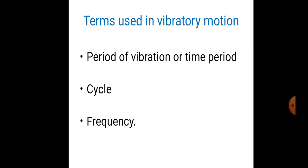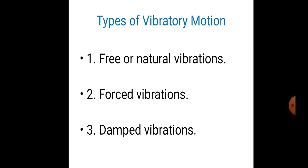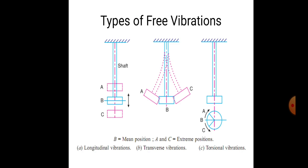Now, what are the types of vibratory motions? There are three types: free or natural vibrations, forced vibrations, and damped vibrations. These are the three types of vibratory motions.